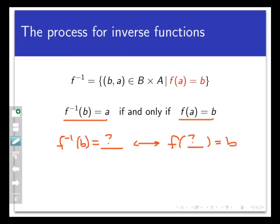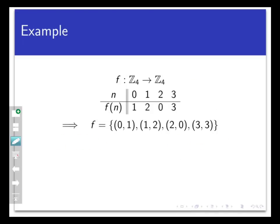That's tricky, so let's look at an example. Let f be a function from Z_4 to Z_4, and let it be defined by the table that you see here. As a set of ordered pairs, f equals the set {(0,1), (1,2), (2,0), (3,3)}. We can see directly that f is a bijection, so f inverse is going to exist and be a function in its own right.